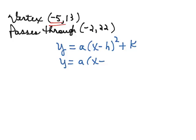So if we look at our h, it's negative 5. And if we look at our k, it's 13. So that gives us y equals a times (x plus 5) squared plus 13.